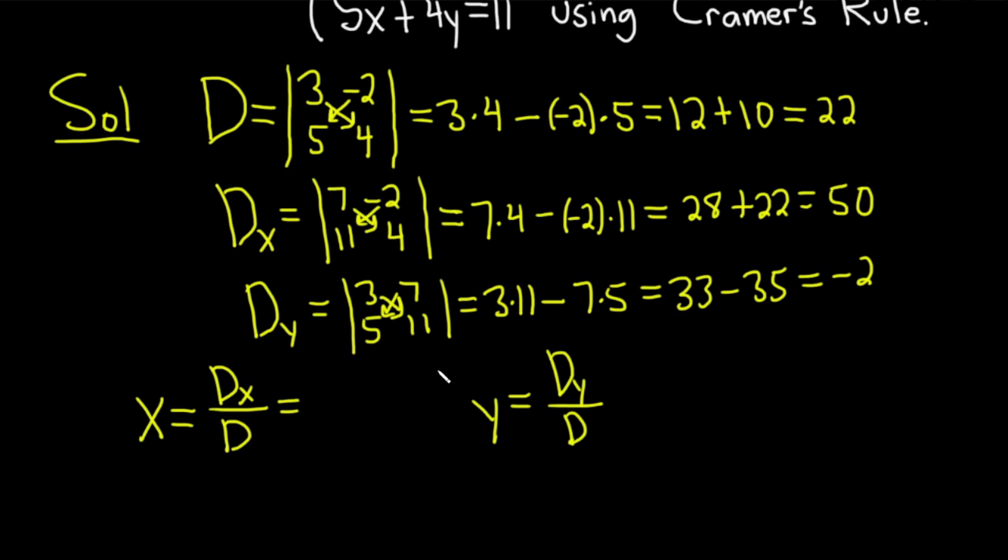So big D sub x was 50. We worked that out earlier. So this is 50 over big D, which is 22. So x is equal to, we can divide the numerator and denominator by 2. So we'll get 25 over 11. That is the x-coordinate of our answer. Our answer is an ordered pair.